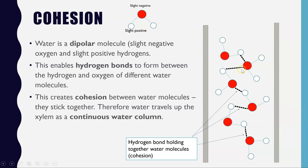The effect of hydrogen bonding is that water molecules stick together — that is what we mean by cohesion. The impact is that water travels up the xylem as one continuous column. Instead of moving up in droplets, it moves as a single column, so if you pull this water column from the top, the entire column moves up with it.